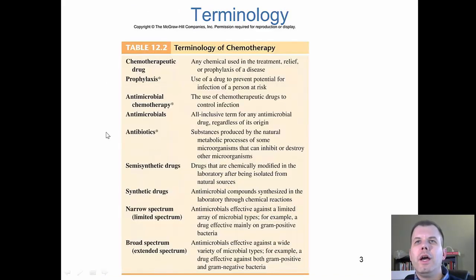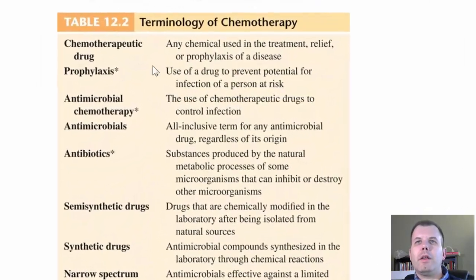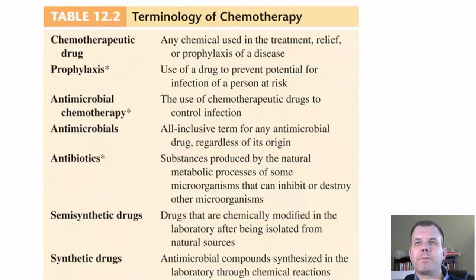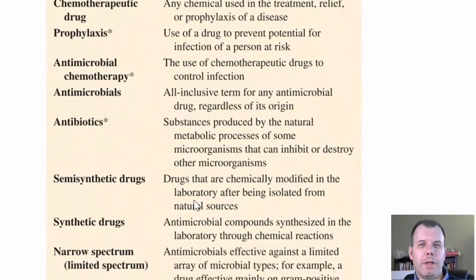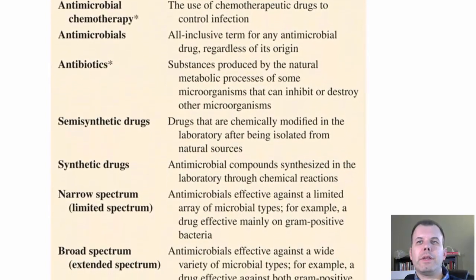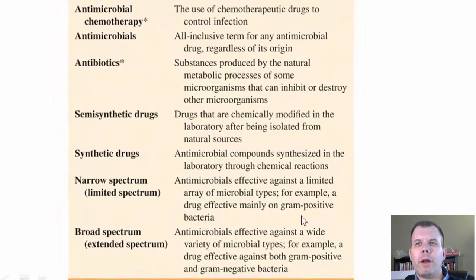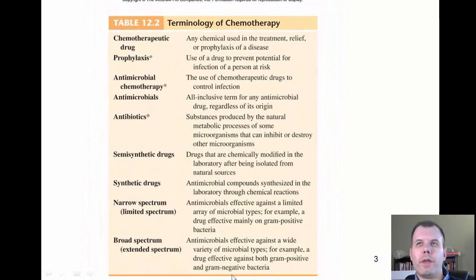Here is some of the terminology. A chemotherapeutic drug is any chemical used in the relief of disease. Prophylaxis means a drug to prevent potential infection. Antimicrobial chemotherapy is basically to control an infection. Antibiotics are used primarily for bacteria. Antimicrobials encompasses almost anything else. Semi-synthetic drugs are partially made in the lab - a natural derivative that has been modified. Synthetic is completely manmade. Narrow spectrum is a small range of bacteria or viruses; broad is a very large range - for example, narrow would be only gram positive bacteria, broad would be both gram positive and gram negative.